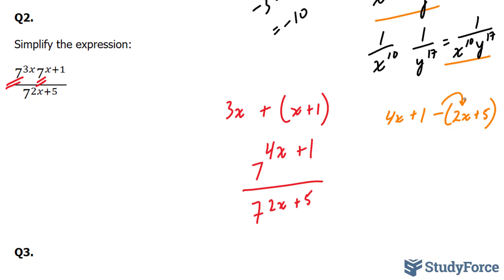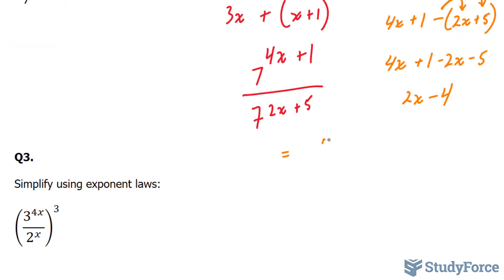So 4x plus 1 minus this part. You distribute the negative. And you end up with, collecting like terms, 4x minus 2x is equal to 2x. And 1 minus 5 is equal to minus 4. And therefore, your final answer becomes 7 to the power of 2x minus 4.